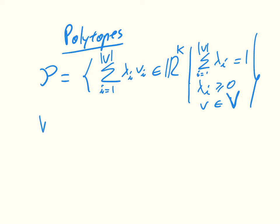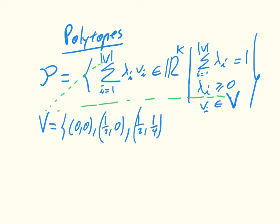What we have is a set V, where these v_i's are little elements of it. As an example, we could have the vector (0,0), the vector (1/2, 0), the vector (1/2, 1/4), and the vector (0, 1/3).